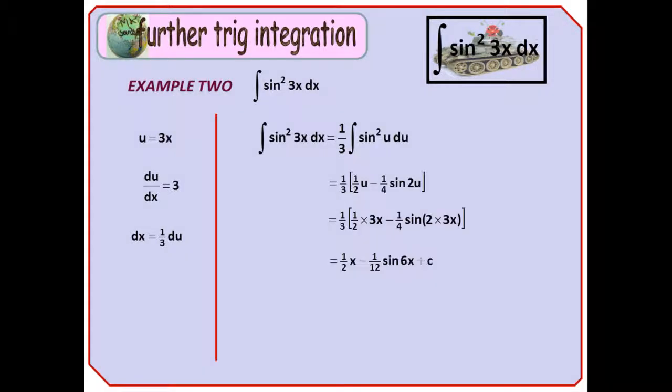Our second example is no harder, but has an interesting result. Well, interesting for me. It's the integral of sine squared 3x. Again, u equals 3x, so we get one third of the integral of sine squared u du. As we know from our extensive list of trig integrals, the integral of sine squared u is a half u minus a quarter sine 2u, so we've got one third of that.